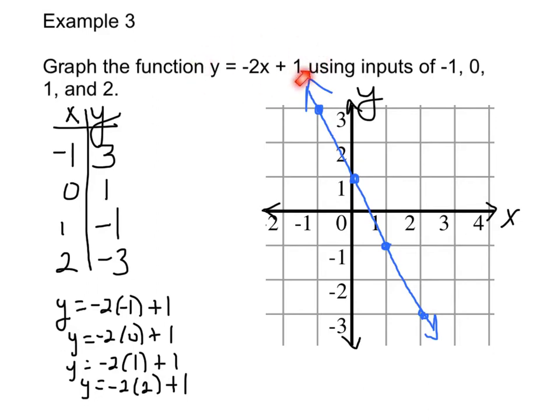You can use what we've been using for the last four months and use slope and y-intercept to check it. Your y-intercept is 1. Our slope is negative 2. We go down 2 over 1. That's what you get if you use slope and intercept to check your answer. But here, we made a t-table, otherwise called an input-output table.